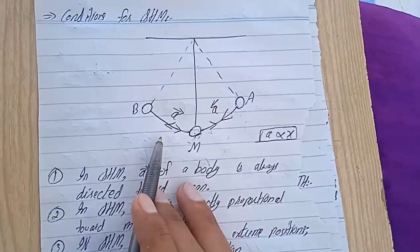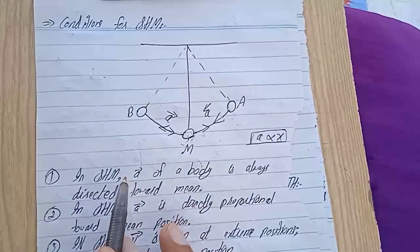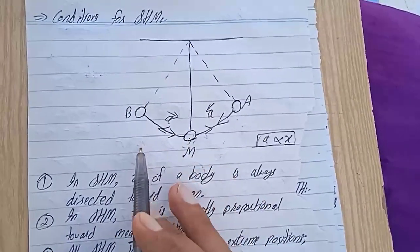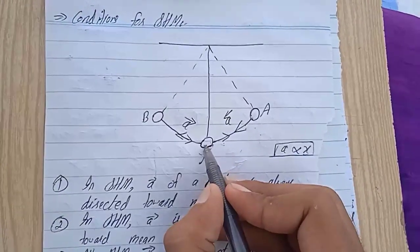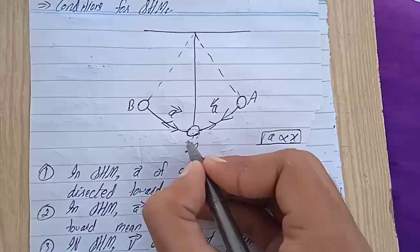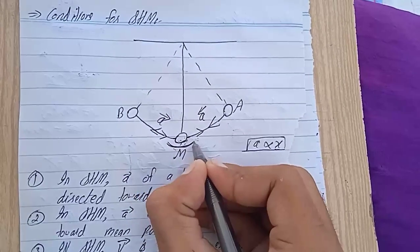So I have written the third condition. If a body is executing SHM, then what will it do? It will vibrate through the mean point. So this is also a condition.